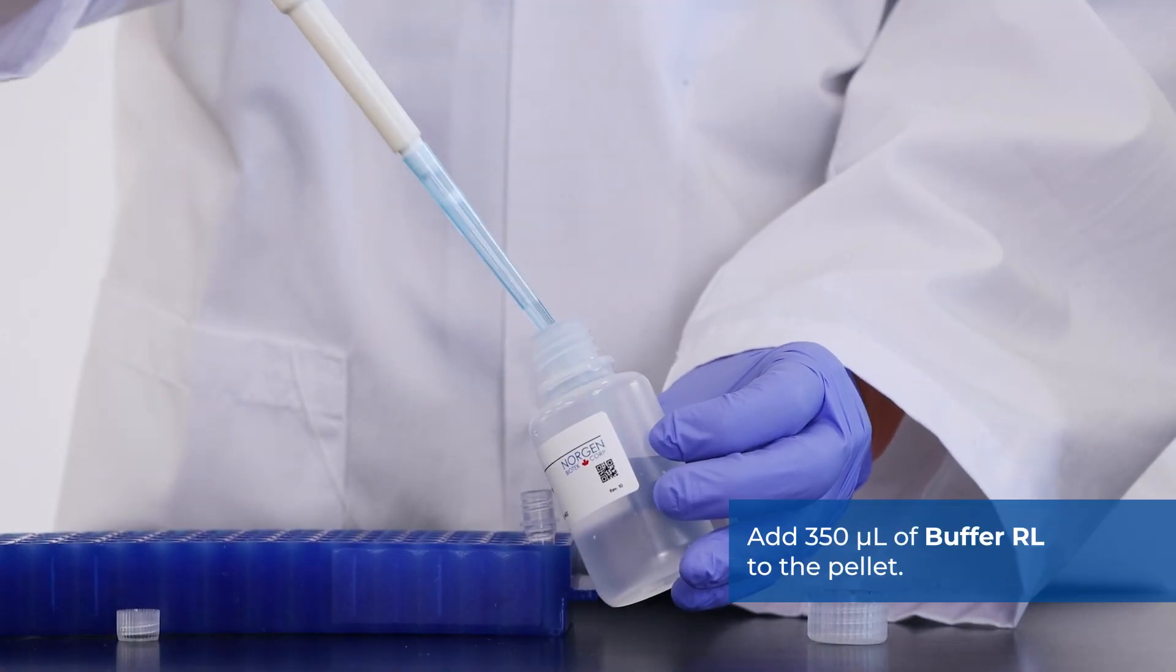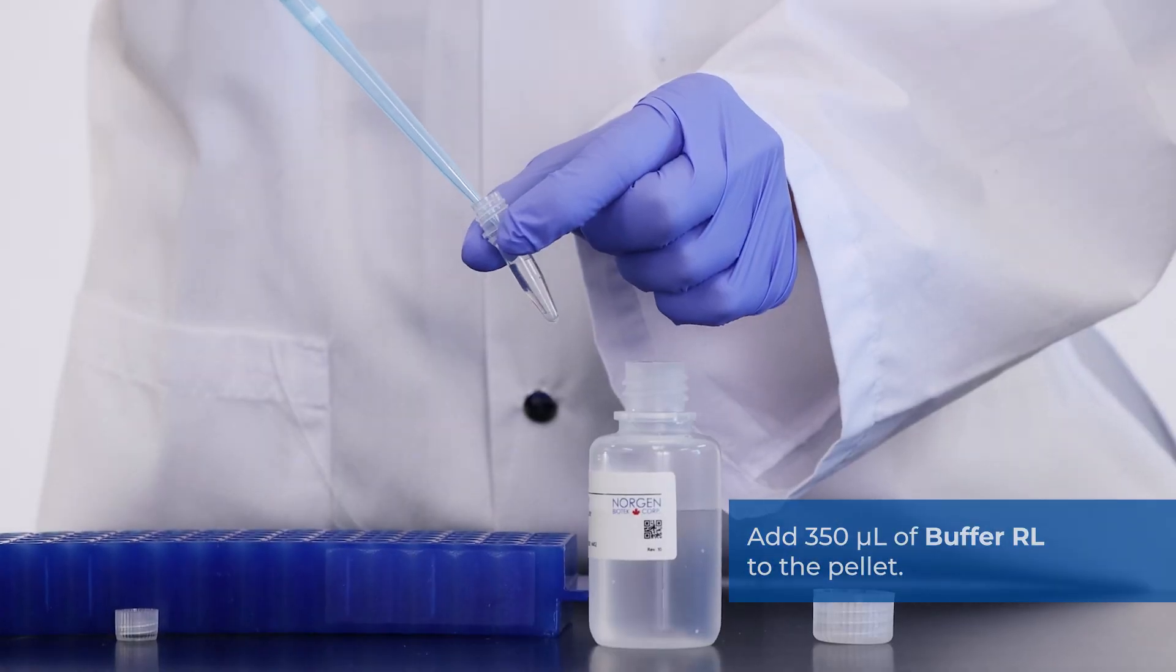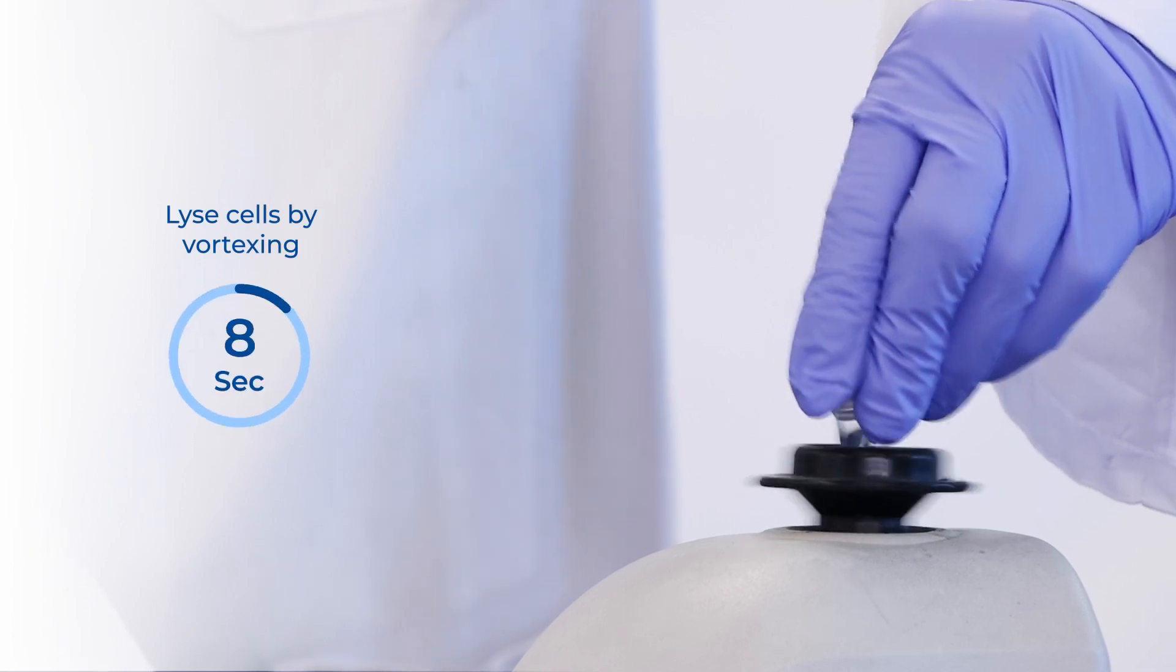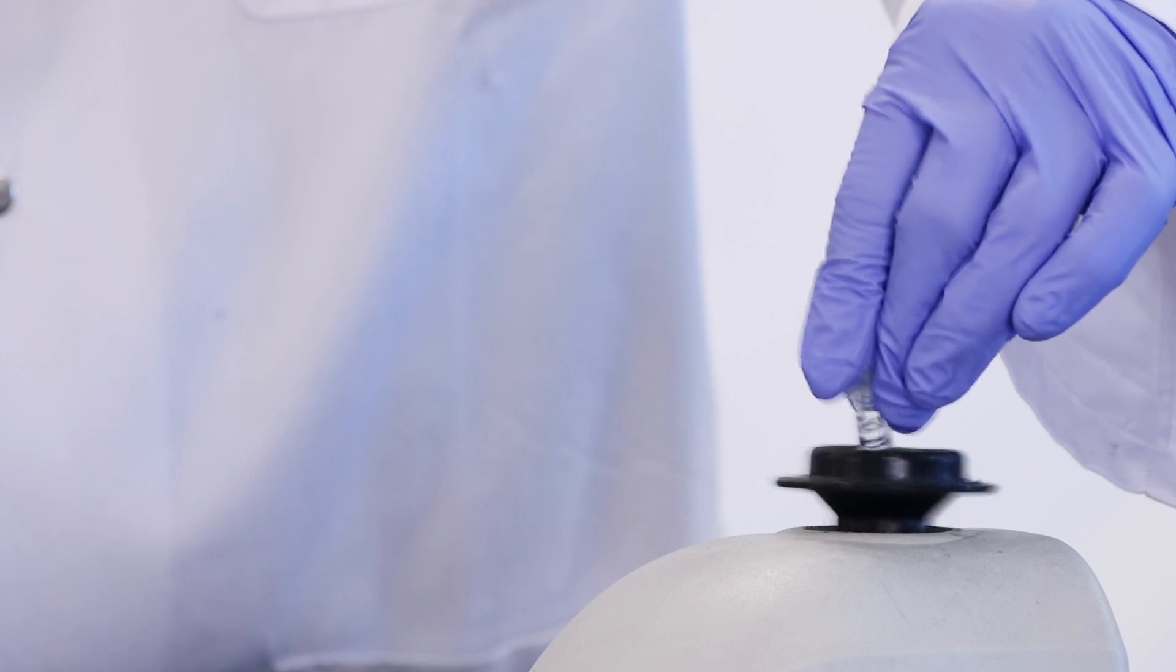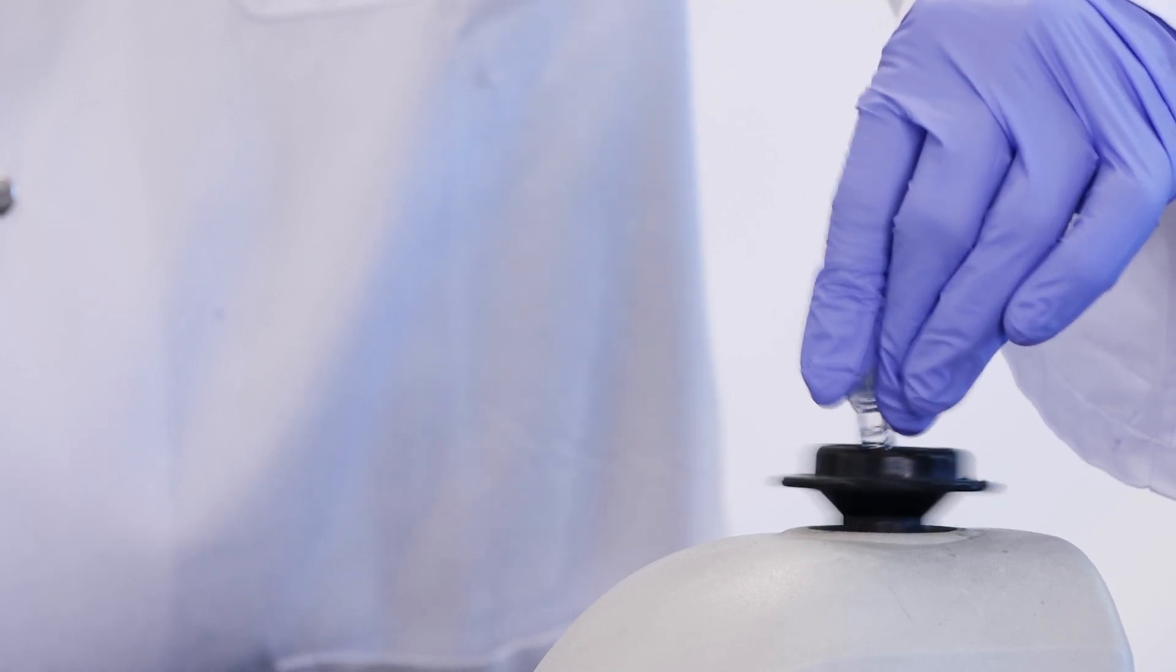Add 350 microliters of buffer RL to the pellet. Lyse cells by vortexing for 15 seconds. Ensure that the entire pellet is completely dissolved before proceeding to the next step.